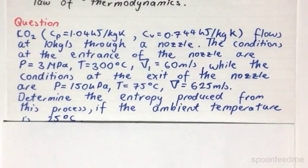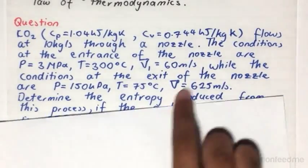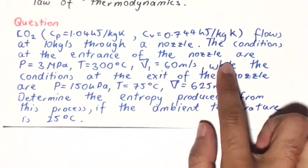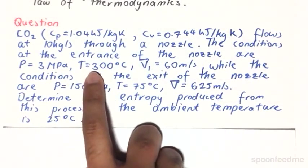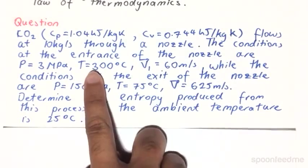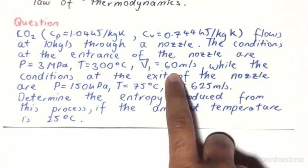The conditions at the entrance of the nozzle are: the pressure is 3 megapascals, the temperature is 300 degrees Celsius, and the velocity is 60 meters per second.